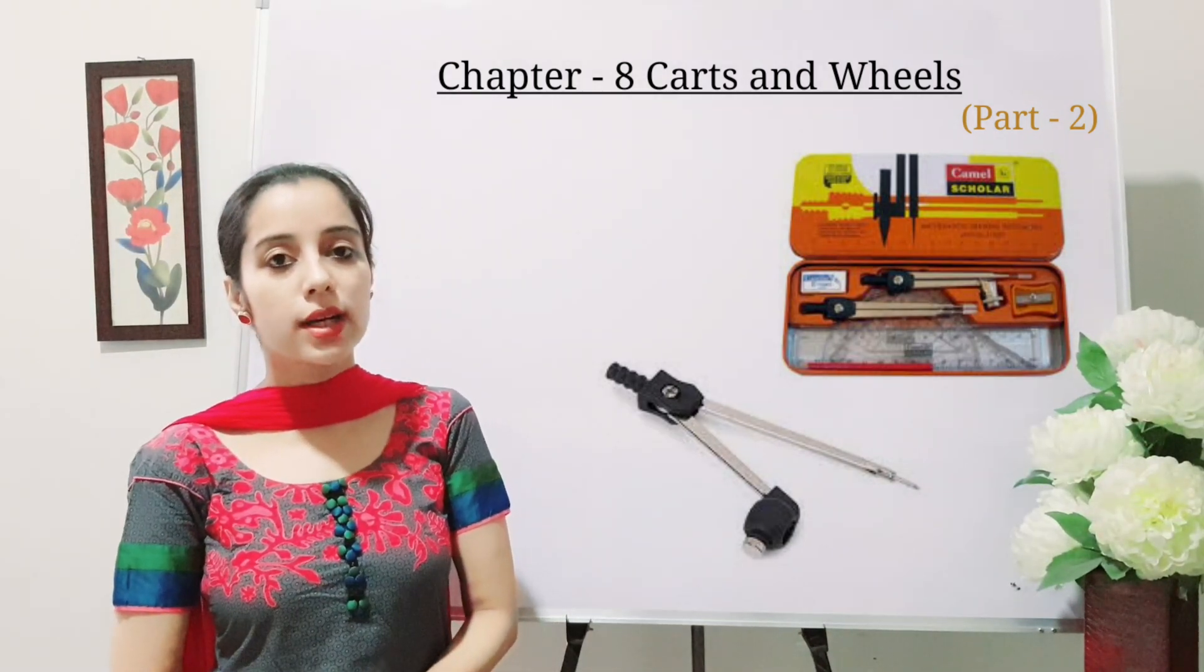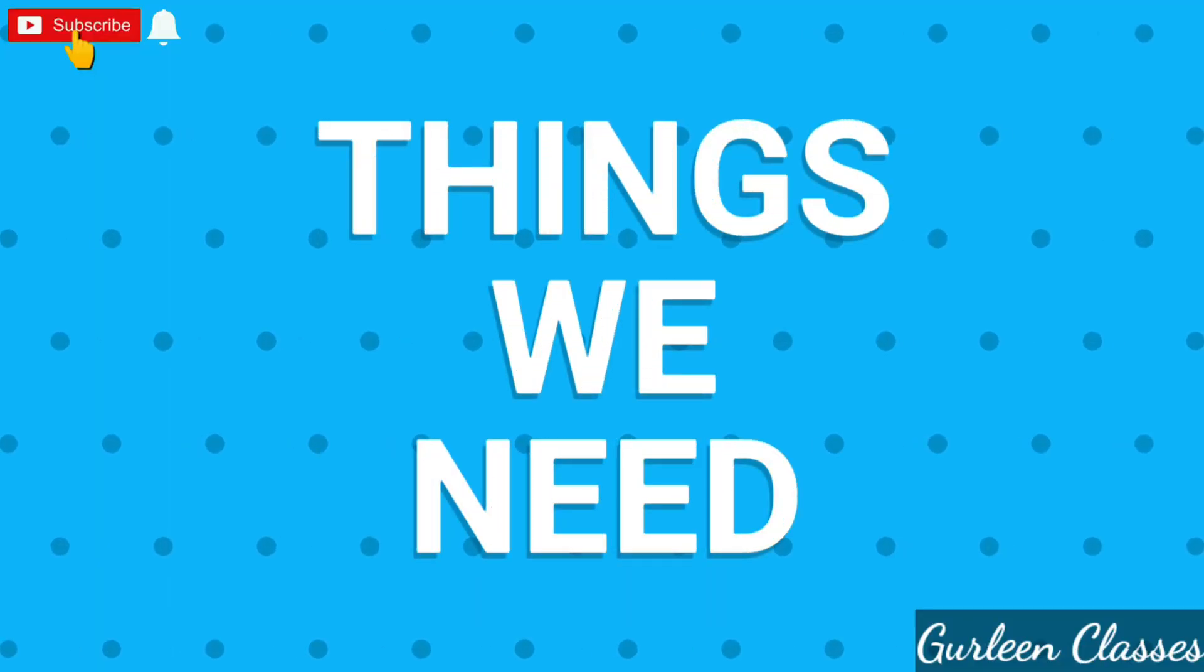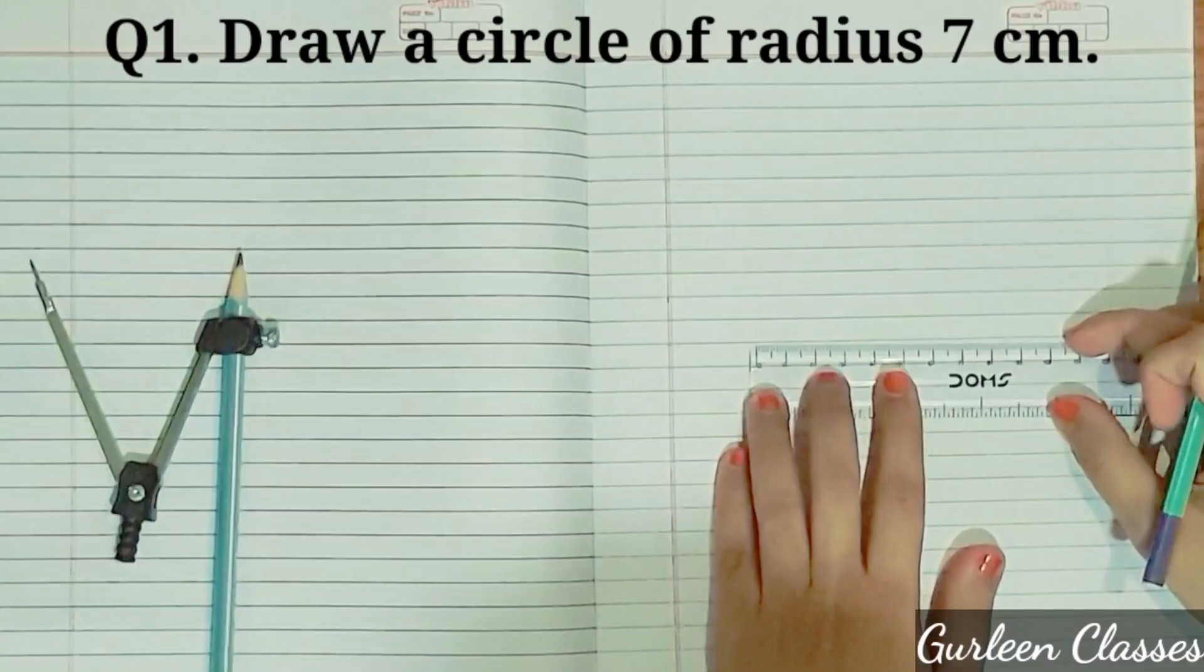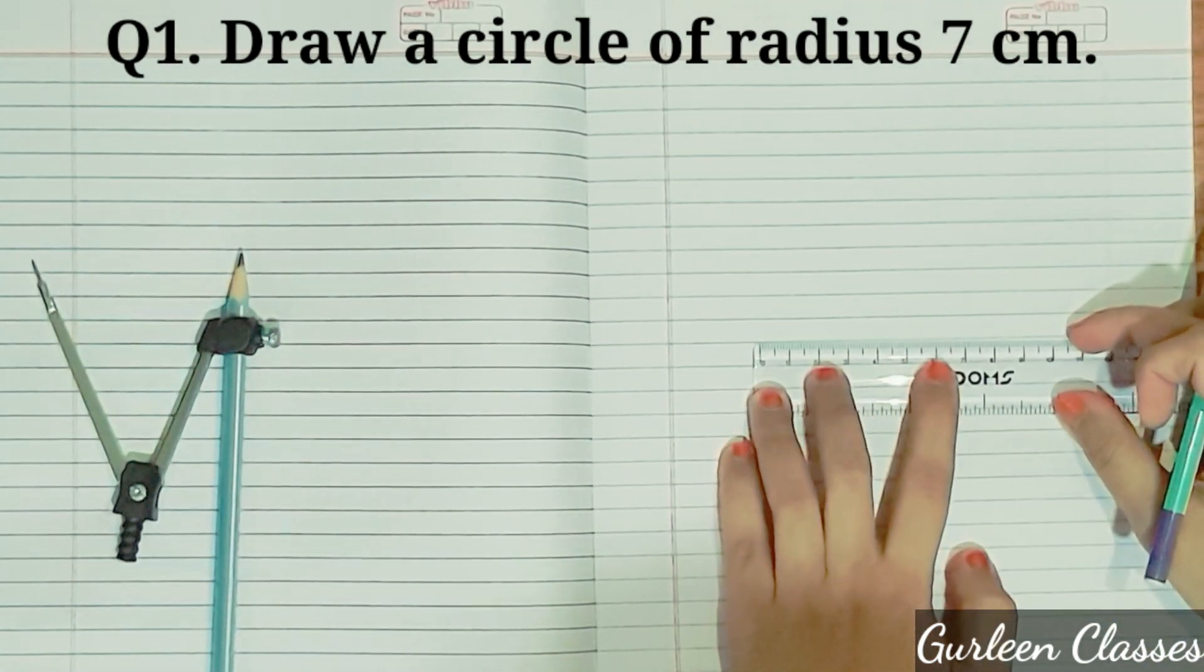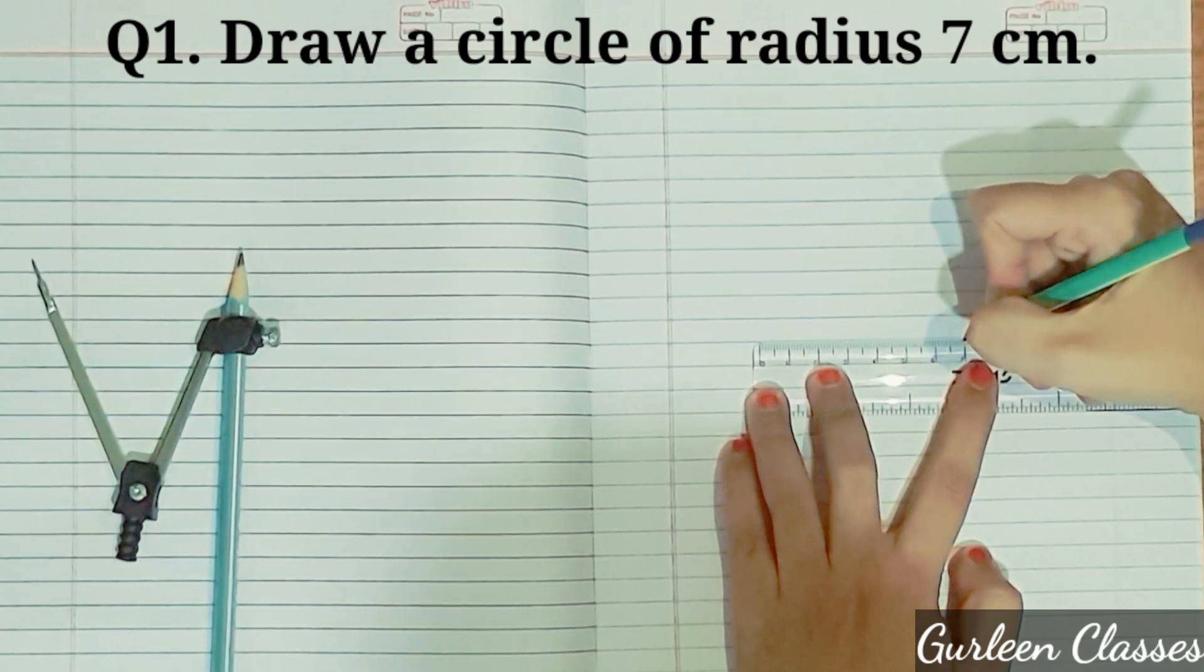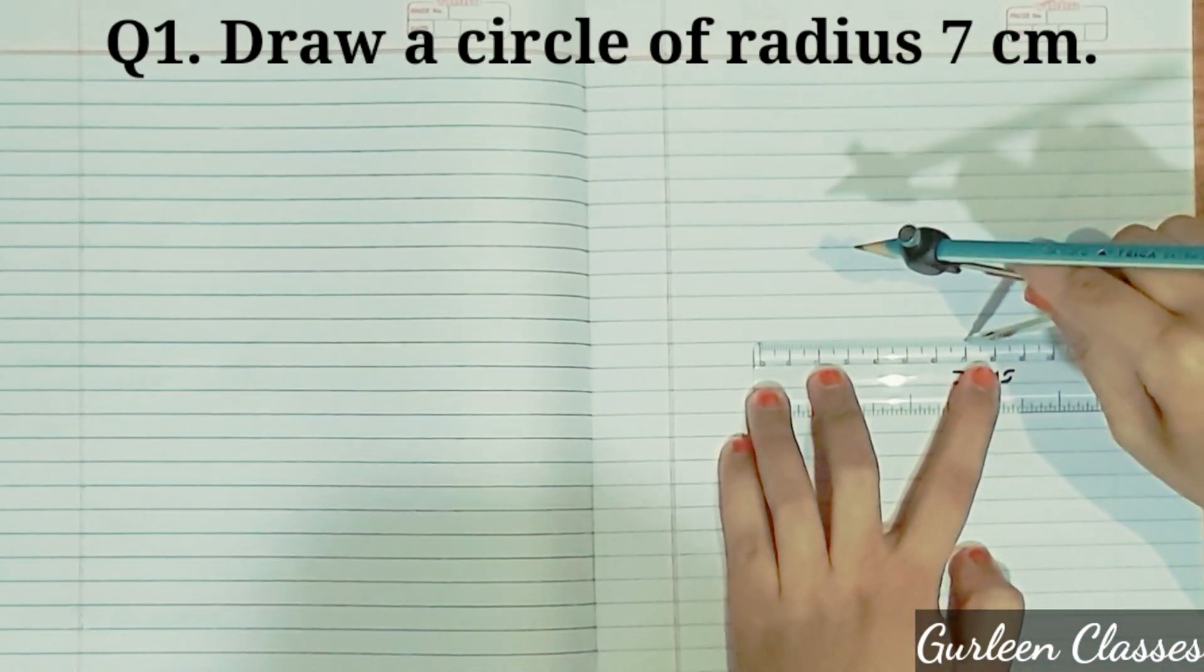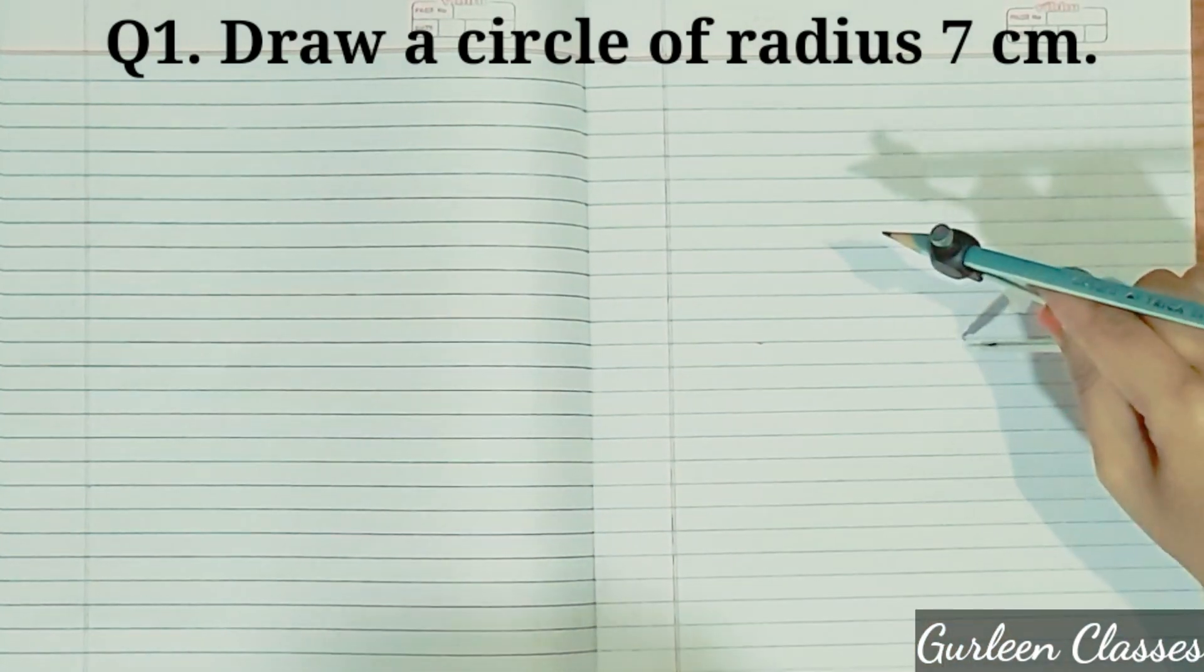So now I will teach you how to draw a circle. So what all we need? A sheet of paper, scale, sharp pencil and a compass. Now let us draw a circle of radius 7 cm. Take a scale and draw points from 0 to 7 cm. In chapter number 2, I told you how to draw a line segment. So here we have drawn a line segment of 7 cm. But I have not drawn line. I am measuring 7 cm with the help of compass. So here I measured 7 cm. Now remove the scale.